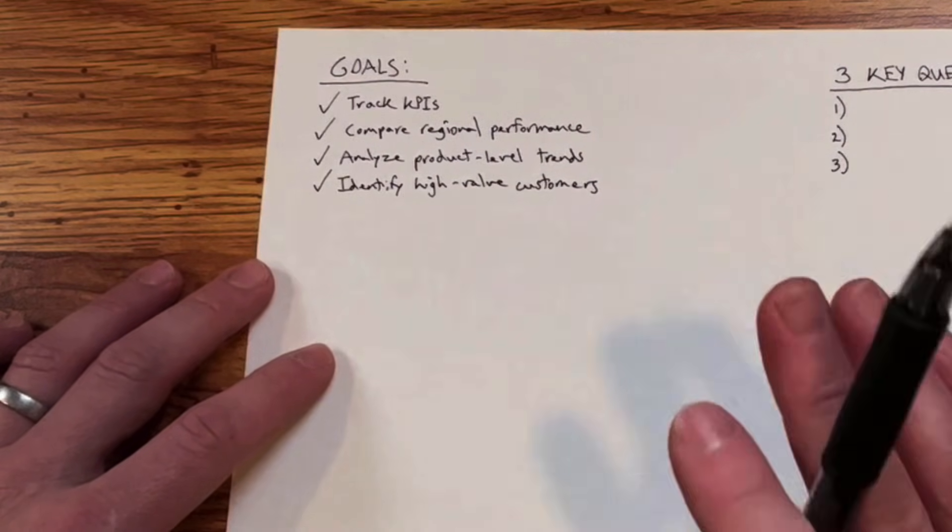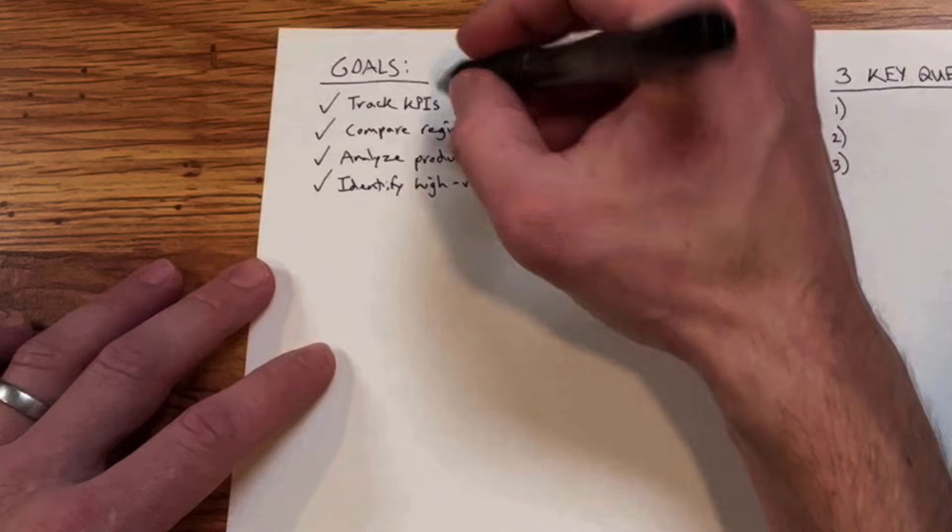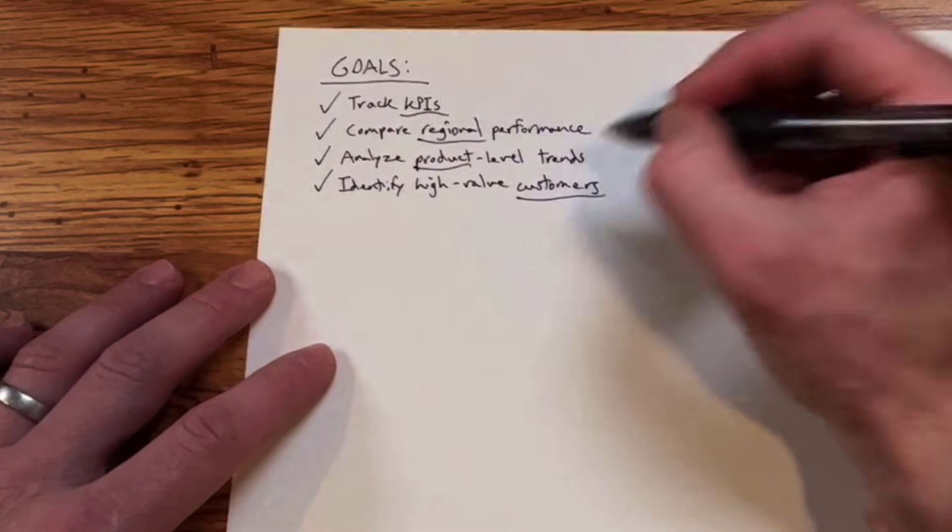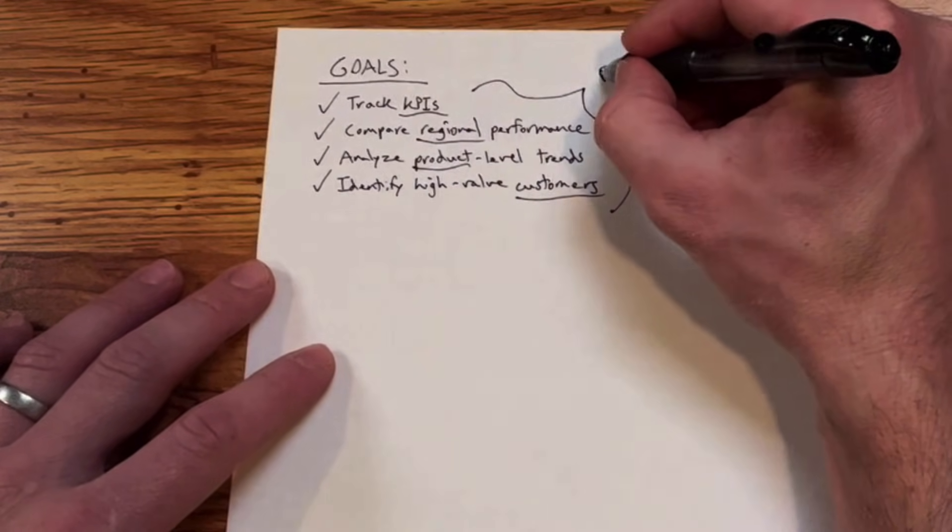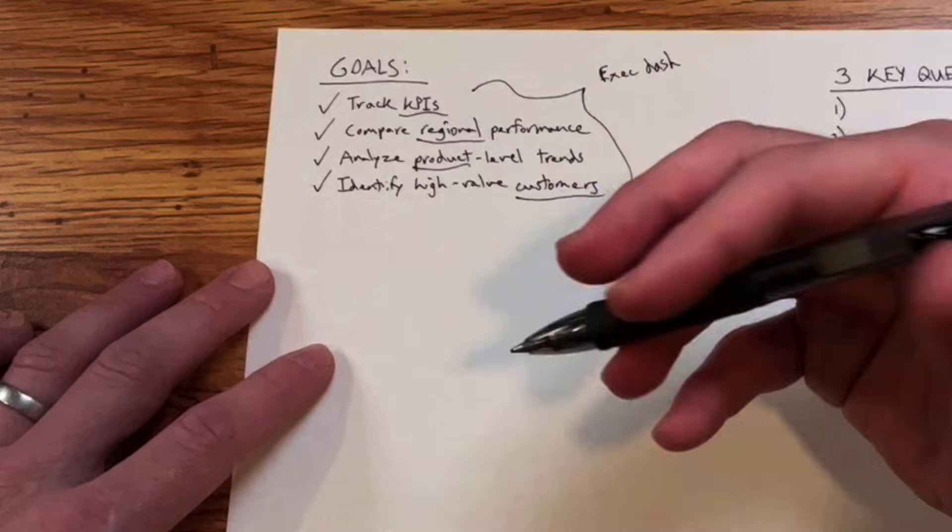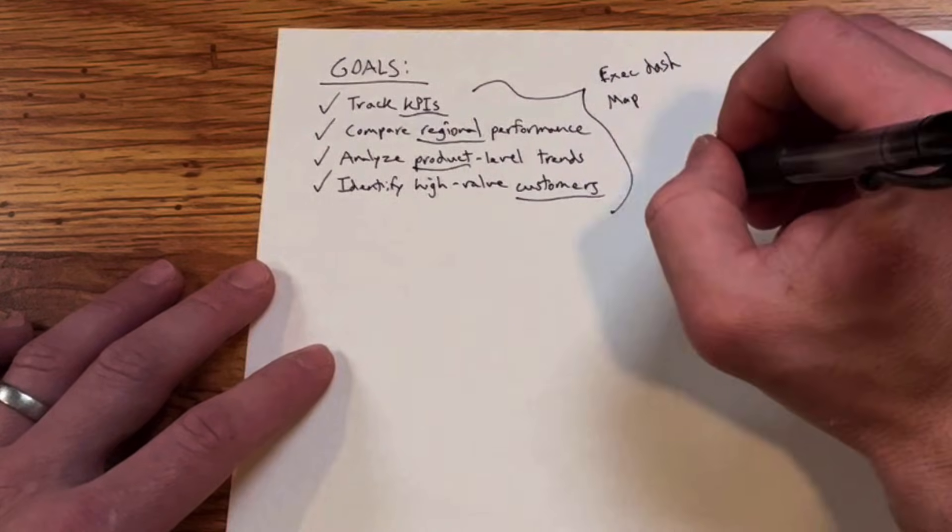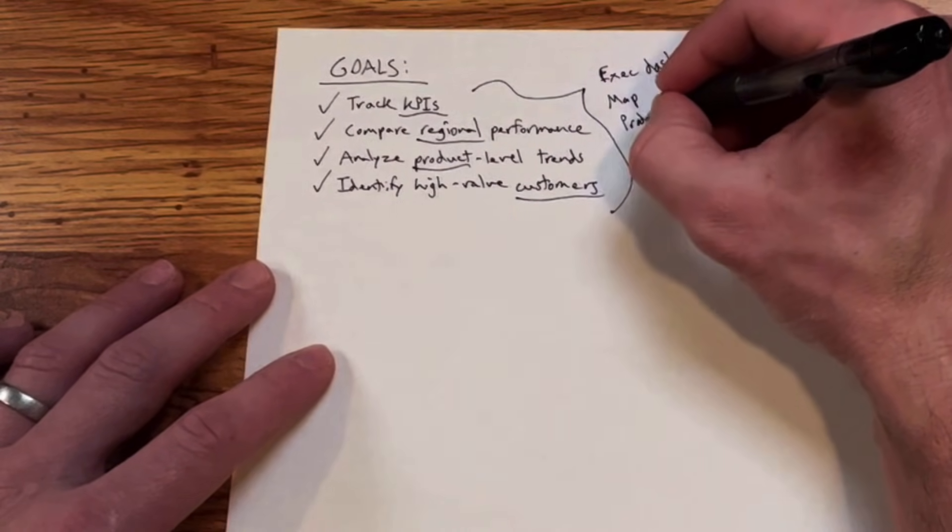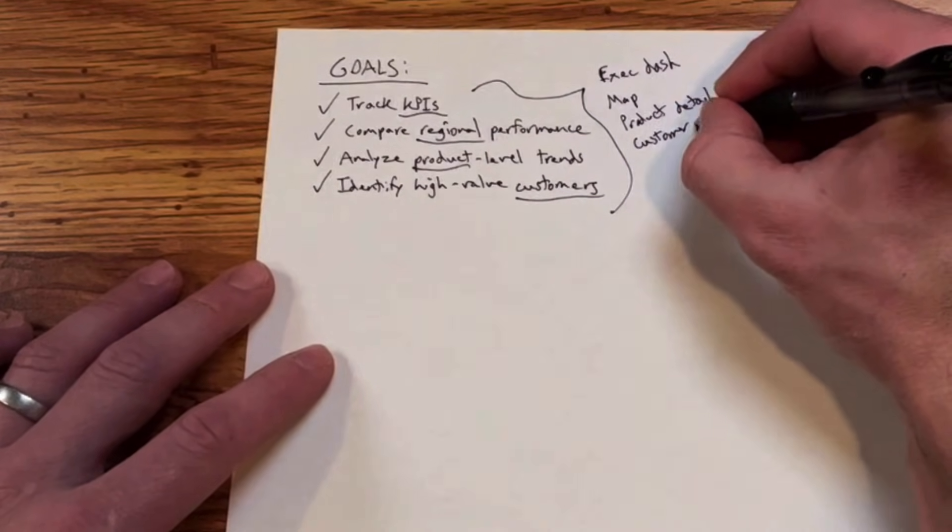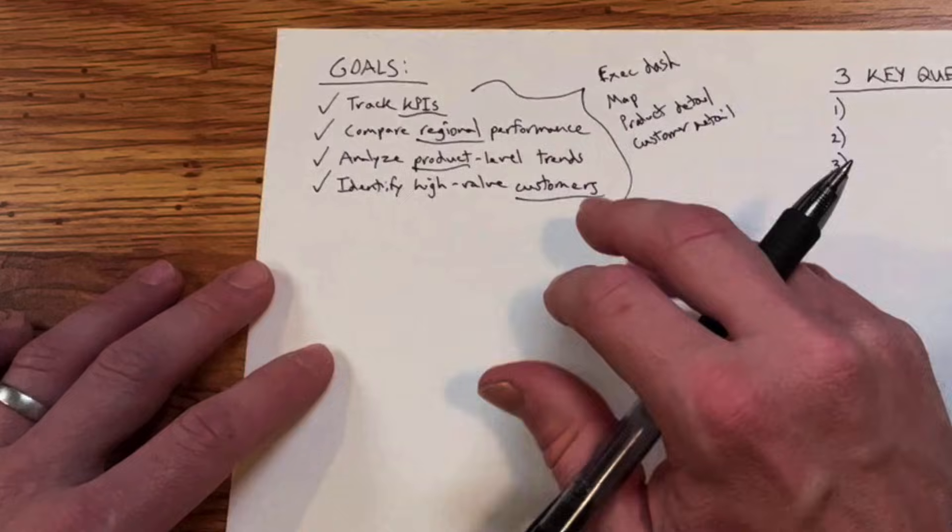That's way too much information to put on a single page or in a single view, so I think what we need to do here is create a multi-page dashboard. When I start to think about these goals, a couple words pop out: KPIs, regional performance, product level trends, and customers. When I think KPIs, I think about an exec dash—those high level numbers, the things executives care about like profit, revenue, high level trending. When I think regional, I think geospatial analysis, so something like a map view. Product level, I think we need a product detail view, and same with customers, we need a customer detail view as well. That way we'll create pages that each serve a very distinct deliberate purpose and collectively help us achieve all of these goals for the dashboard.